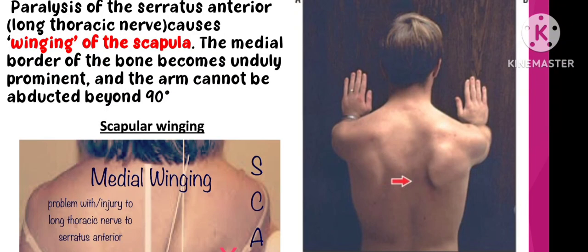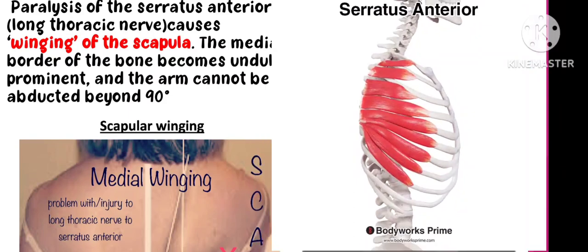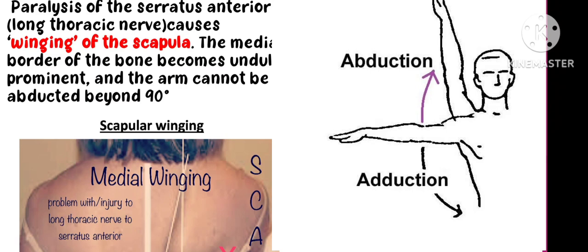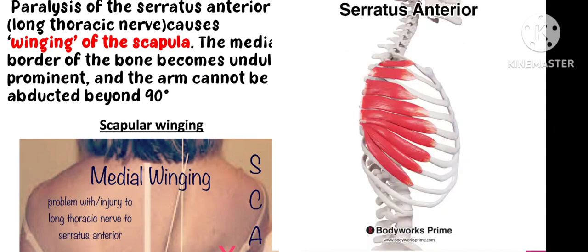So what is winging of the scapula? The serratus anterior muscle is one of the key muscles involved. This muscle is responsible for abduction — meaning movement away from the body — above 90 degrees. So the serratus anterior muscle is active during abduction beyond 90 degrees.